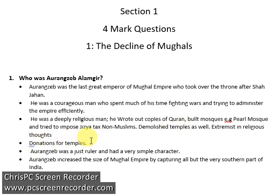On the other hand, we also see him from an emperor's point of view — he was supportive of his non-Muslim people as well, as he gave donations for the construction of temples. Then, he was a just ruler and had a very simple character — a basic, simple life — emphasizing more on expanding his empire and administering it efficiently and effectively. Thank you.